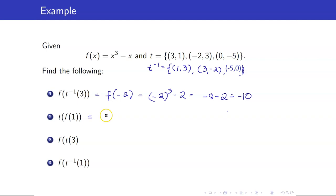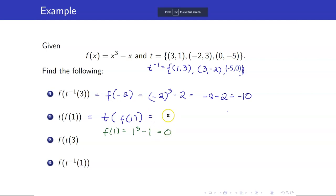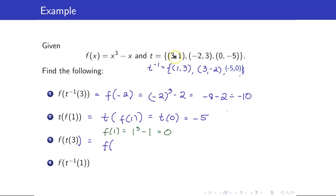Next, t of f of 1. First, f of 1 is 1 cubed minus 1, which is 0. So t of f of 1 is just t of 0, and t of 0 is -5. Next, f of t of 3. Looking at the function t, when x is 3, the y-coordinate is 1, so t of 3 is 1. And f of 1 we already have — it's equal to 0.